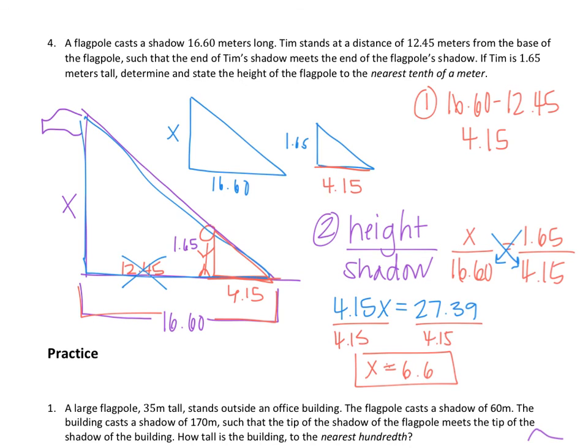Alright, so final answer here is 6.6. It says round to the nearest tenth and your calculator actually already did that for you. So 6.6 should be your final answer for the height of this flagpole. The rest of the time is yours to work on practice, so please make sure that you are going back and reviewing the video, reviewing your notes as you move on to the practice in order to be successful.